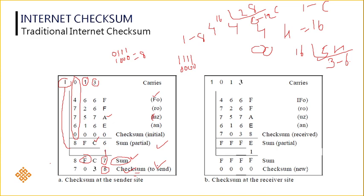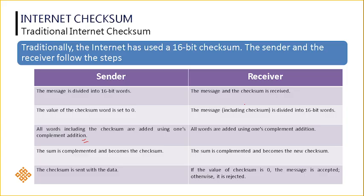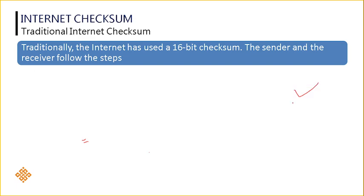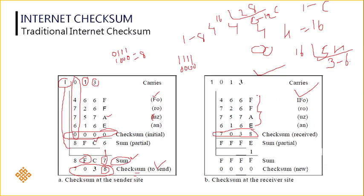This checksum that we got, we are sending along with the original data — that is what we have sent at the receiver side. At the receiver side, this is the original information Forouzan, and along with that I have appended the checksum, which is 7, 0, 3, 8. That is what your first step for the receiver side: the message is divided into 16-bit words. Same thing I have done here — the entire message again divided into 16-bit words.